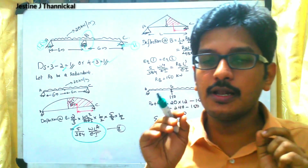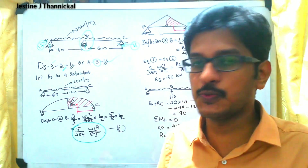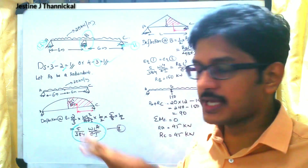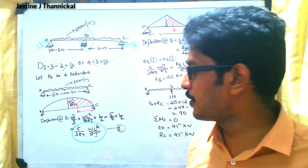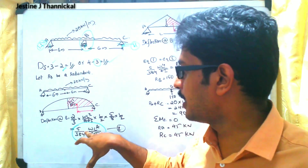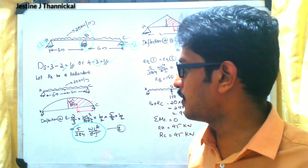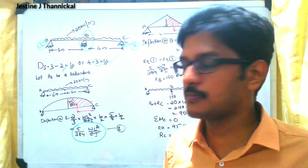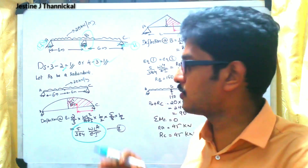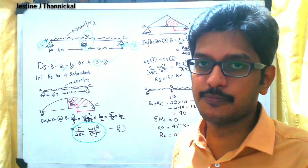So for a simply supported beam with UDL, the deflection at the center point is 5WL⁴ / (384EI). You should either memorize this or derive it yourself.